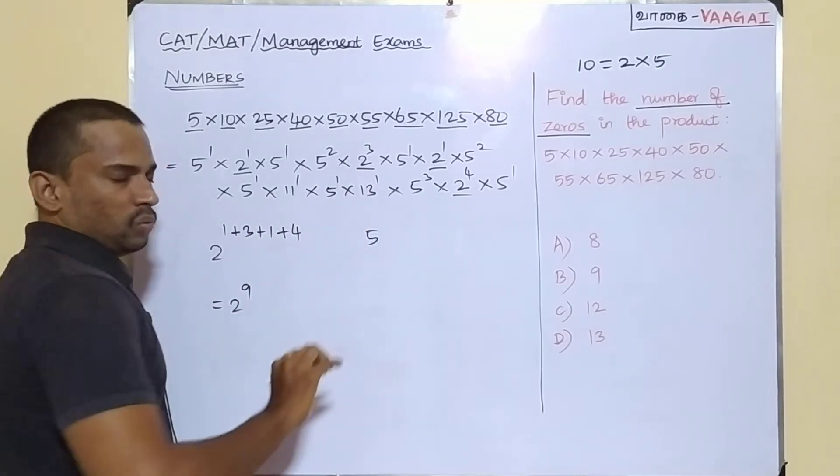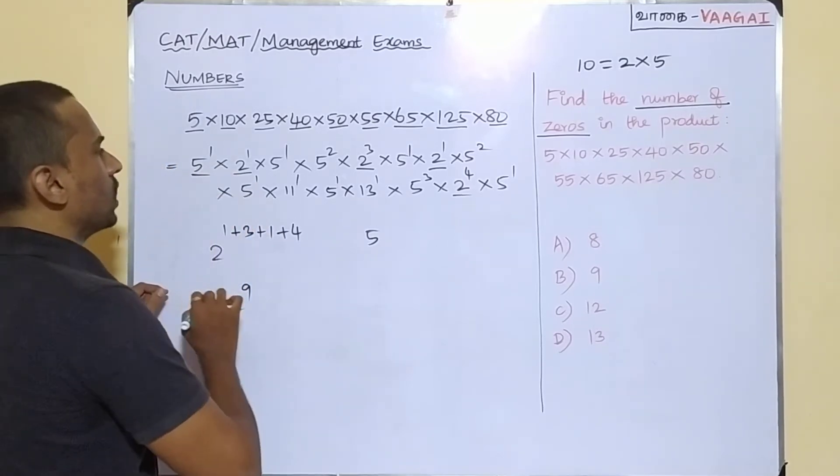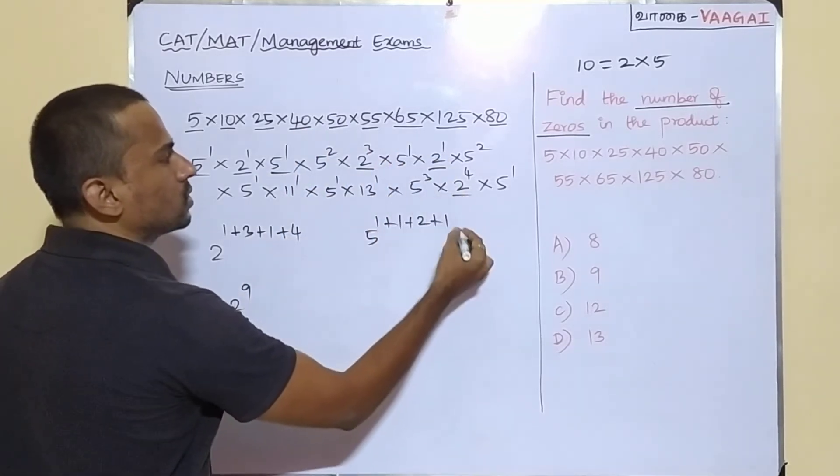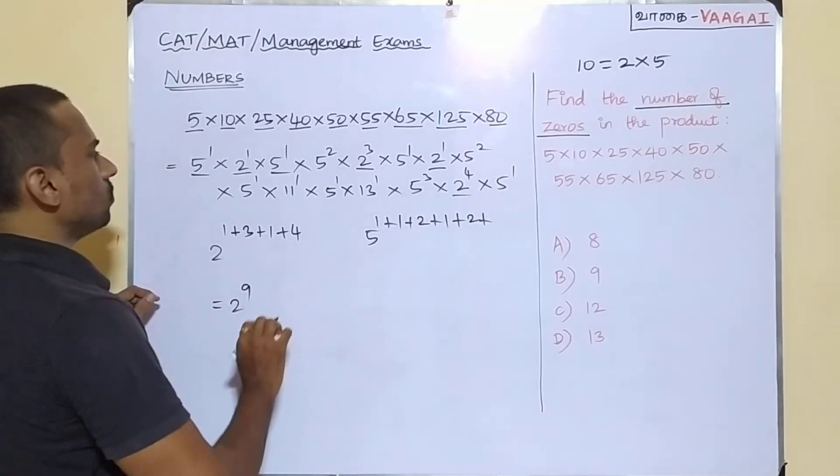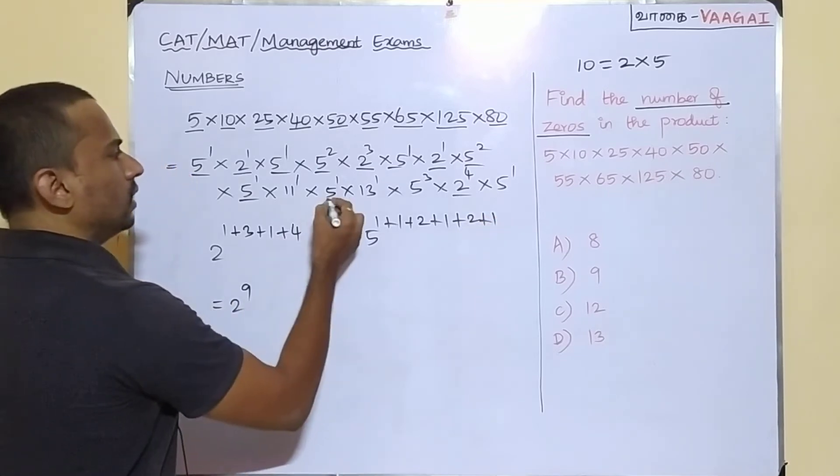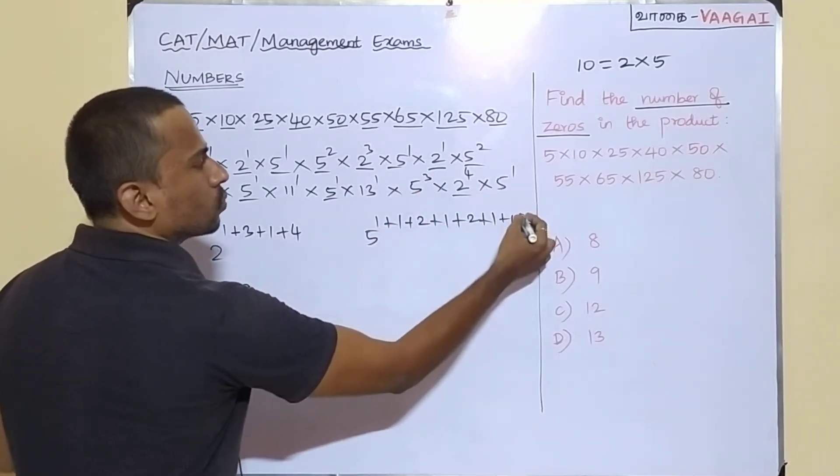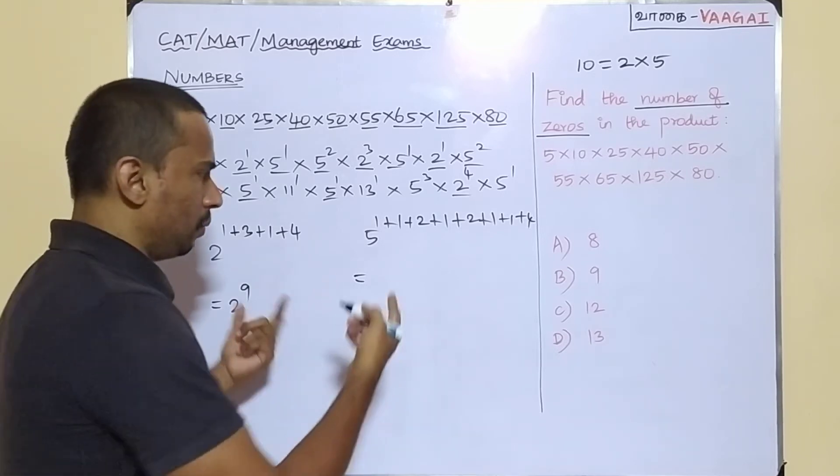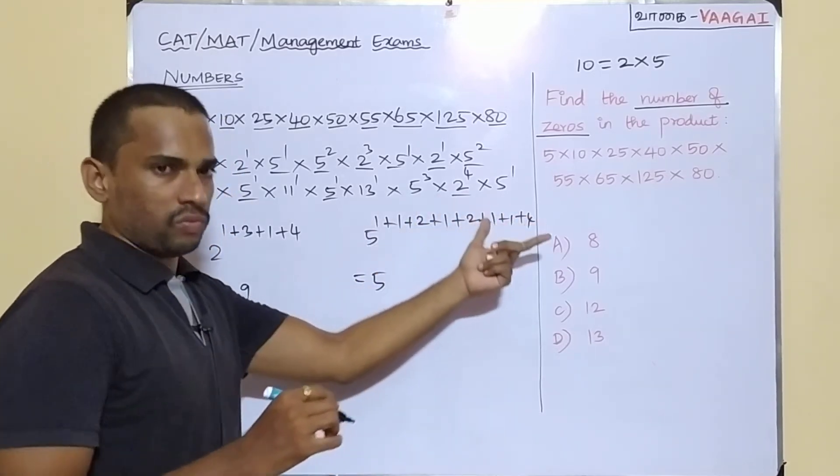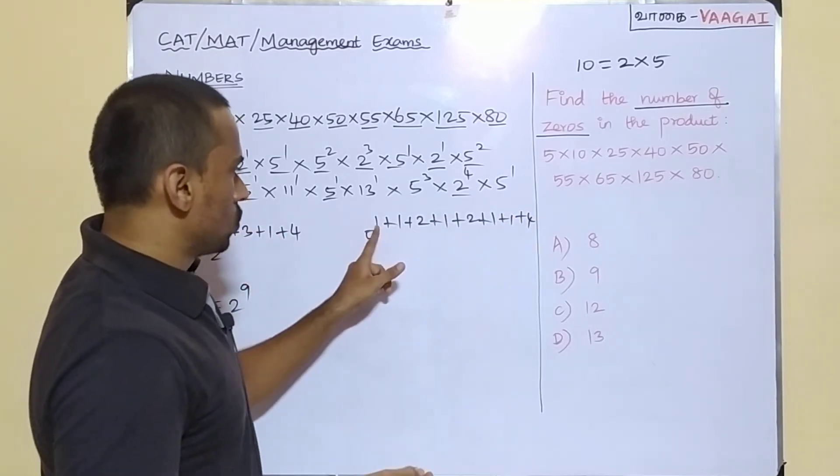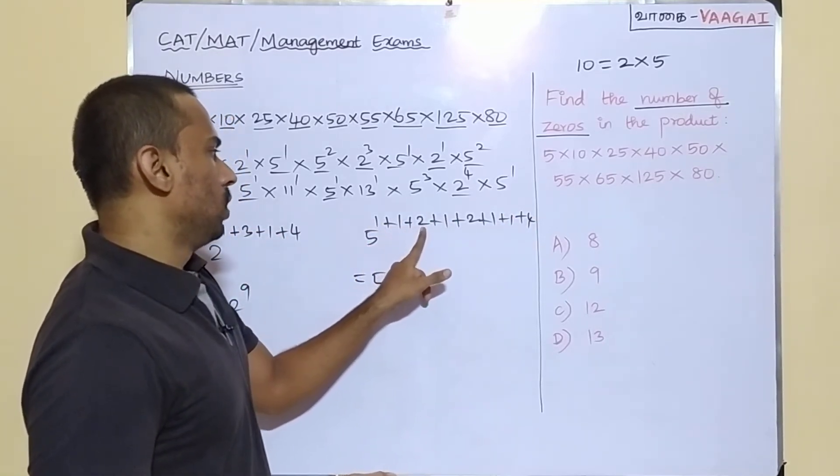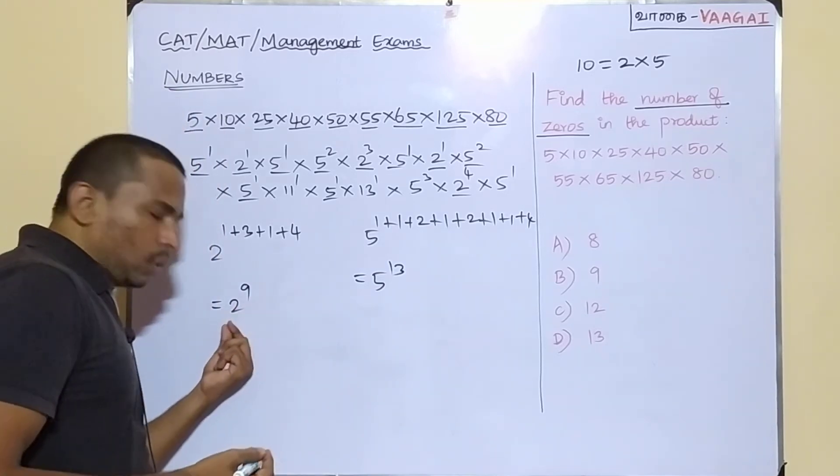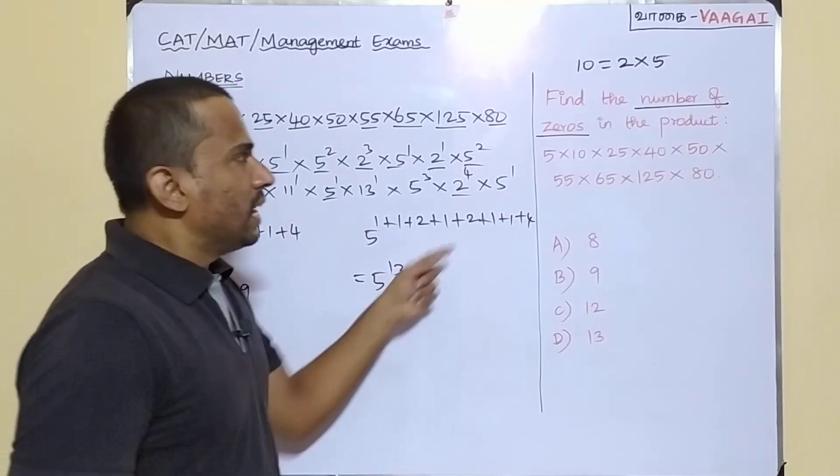Next, come to 5s powers. Here 5s powers will count to, we have 5 power 1 plus 5 power 1 plus 5 power 2 plus 5 power 1 plus 5 power 2 plus 5 power 1, then again plus 1, again we have plus 3 plus 1. So it seems that 5 power is more available. We have a lot more 5s than 2s. So let's confirm it. 1 plus 1, this will be like 2, 4, 5, 6, 7, 8, 9, 13. So we have 13 5s. So that means there are 9 2s and 13 5s available inside this product.